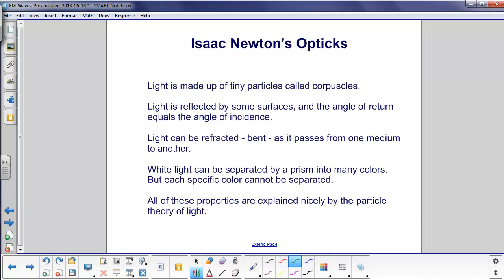These were all covered with Isaac Newton's optics, where he said light is made up of tiny particles called corpuscles. It's reflected by some surfaces, and the angle of return equals the angle of incidence.